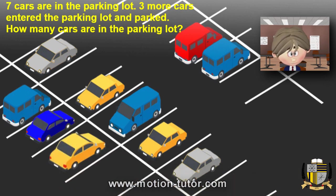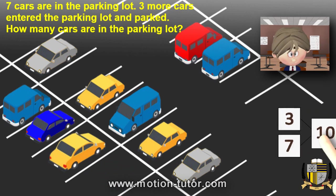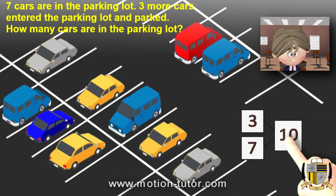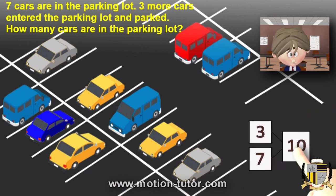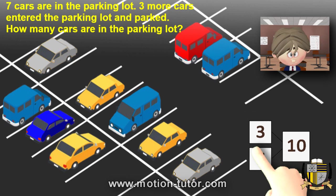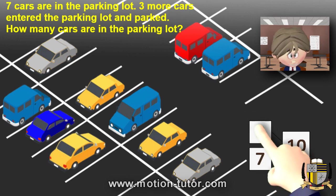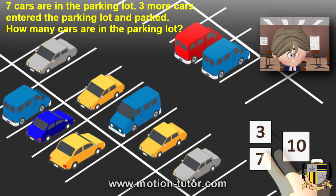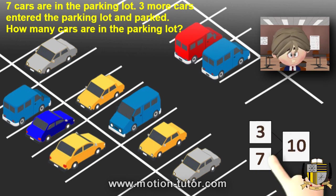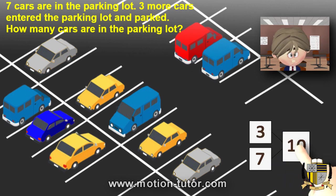Let's look at that number bond. Here's the seven together with the three that came in, and together they're equal to ten. Seven plus three is equal to ten.